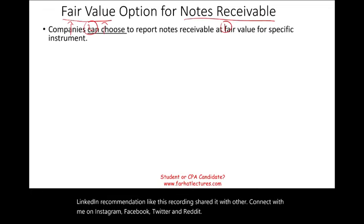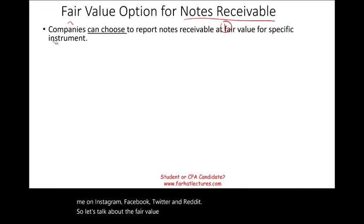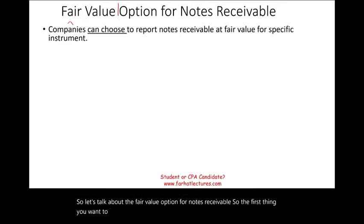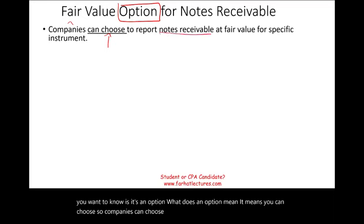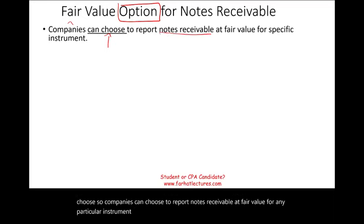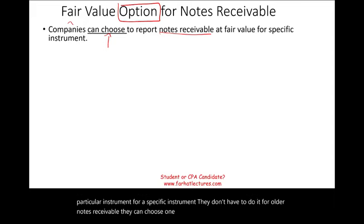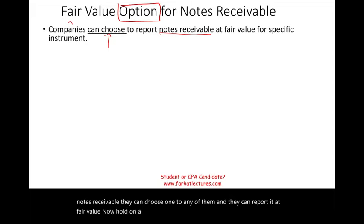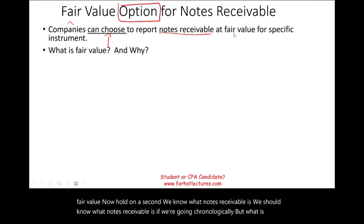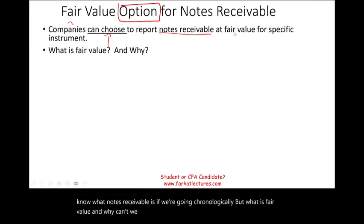Let's talk about the fair value option for notes receivable. The first thing to know is it's an option — it means you can choose. Companies can choose to report notes receivable at fair value for any particular instrument, for a specific instrument. They don't have to do it for all notes receivable; they can choose one, two, or any of them and report it at fair value. But what is fair value, and why can we report notes receivable at fair value?